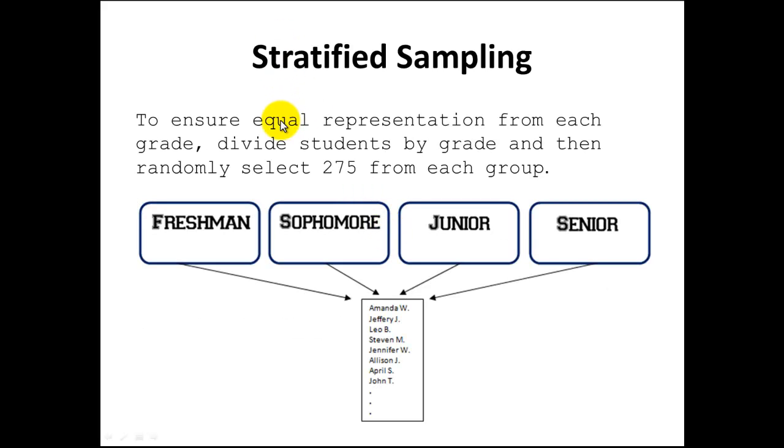To ensure equal representation from each grade, we would divide the students by grade and then randomly select 275 students from each group. If we were concerned that we might get a sample with too many younger students or too many older students, and that might affect whether or not it was representative of the entire population, we would make an effort to group students by what year they were in school, then select 275 students in a random fashion from each of these groups and combine them together. This is called stratified sampling.